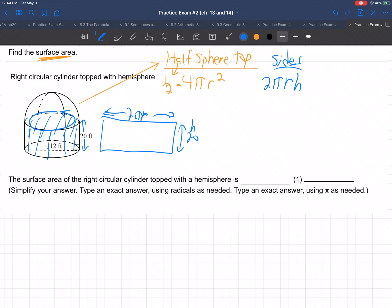So that's the sides. And then the last piece of the puzzle is the bottom. The bottom is a circle. So that's πr². So there's the three pieces we need to add up.